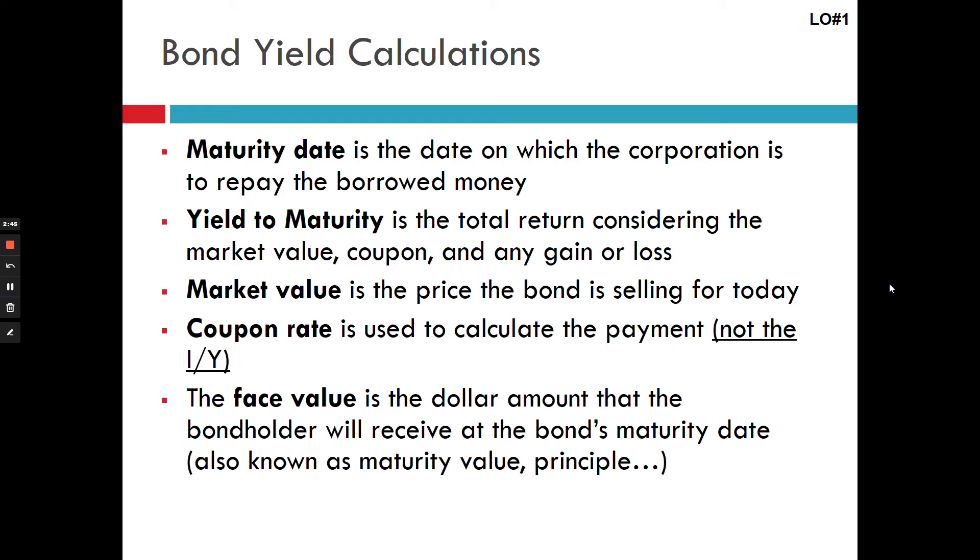And finally, face value, which is the same as maturity value, which is the same as principle. That's how much you're going to get someday. So that's your future value. Watch out because you'll think face value, future value, same thing. That makes absolute sense. But you might hear principle and think, well, if face value is future value, principle is present value. No, your principle is the same as face value, is the same as maturity value, is the same as future value. And this is almost always a thousand dollars. And again, you're going to assume it's a thousand dollars unless you're specifically told otherwise.